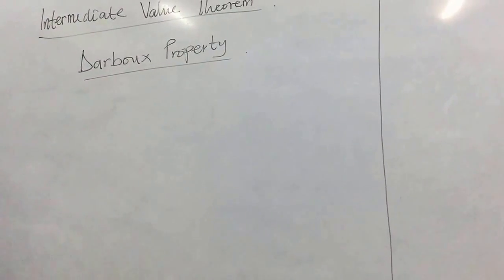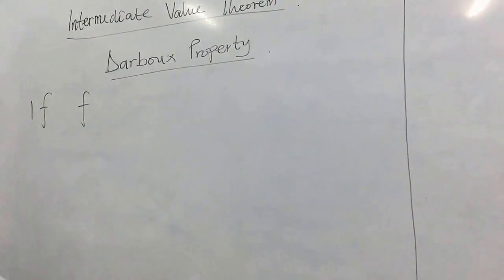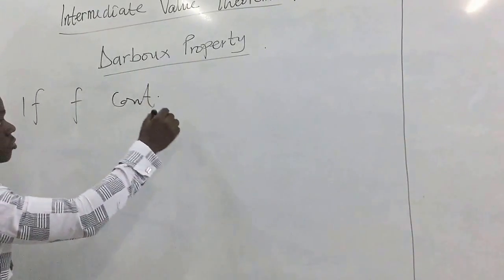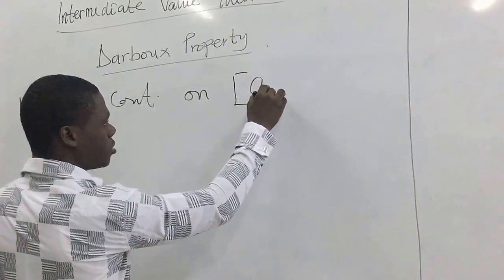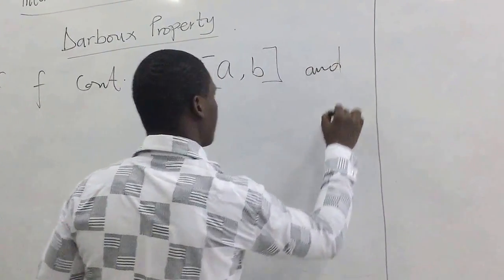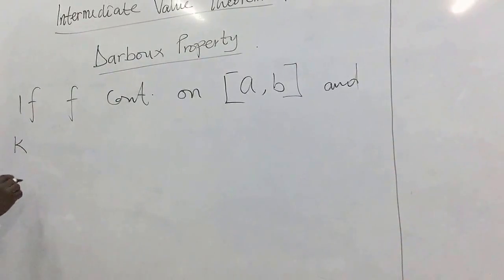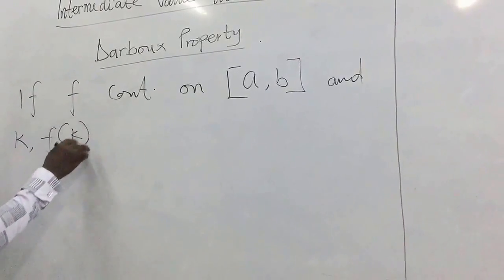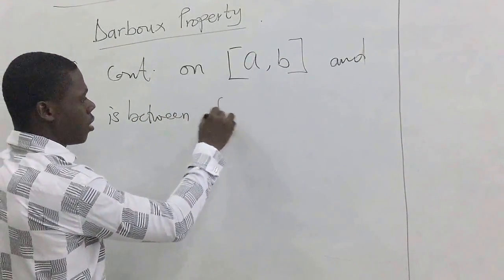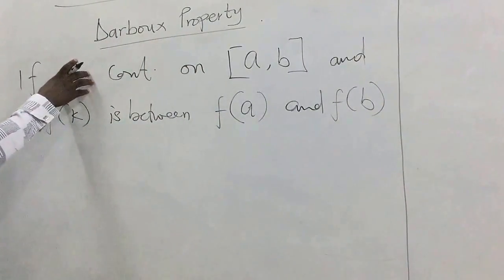The property says: let's have a certain function f, where the domain could be x or anything. If f is continuous on a closed interval, then we have a certain value p such that f(k) is between f(a) and f(b). So we are looking at a function which is continuous on a closed interval.